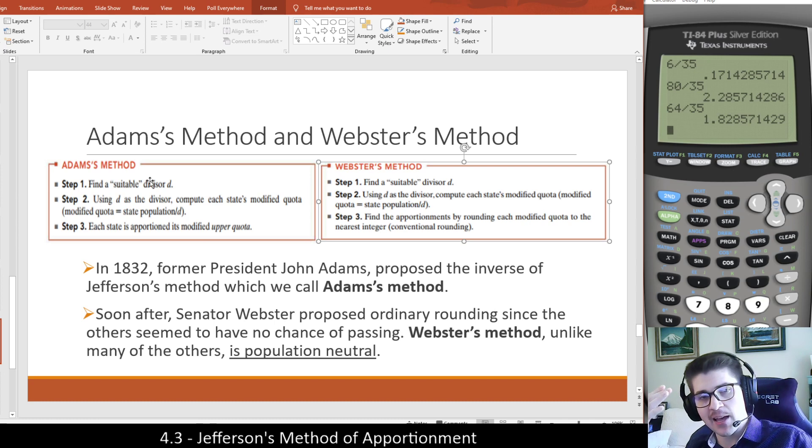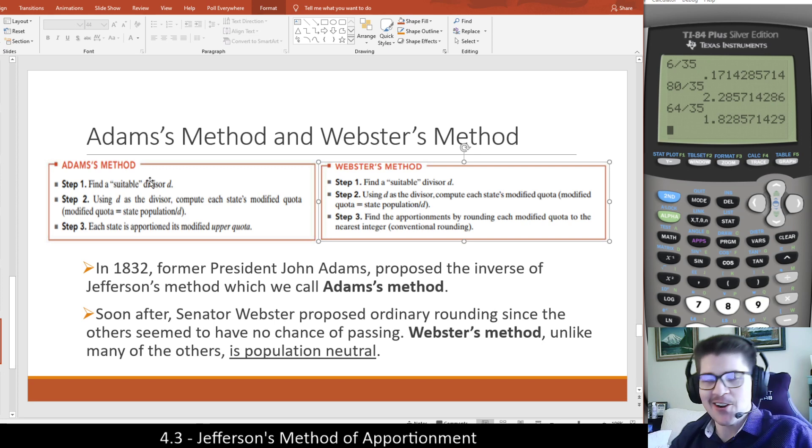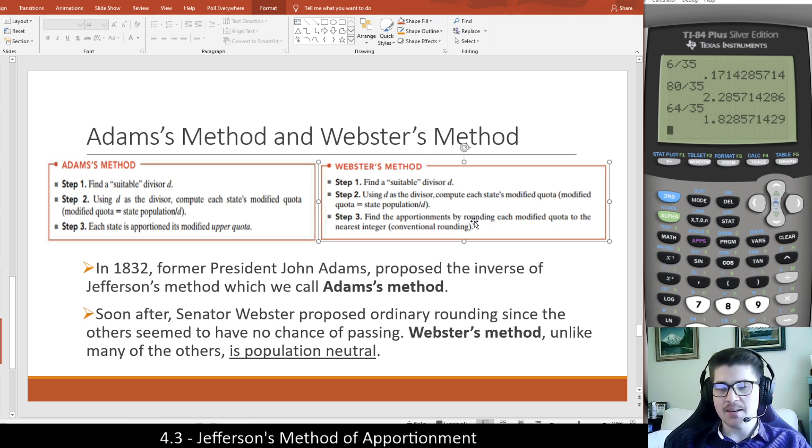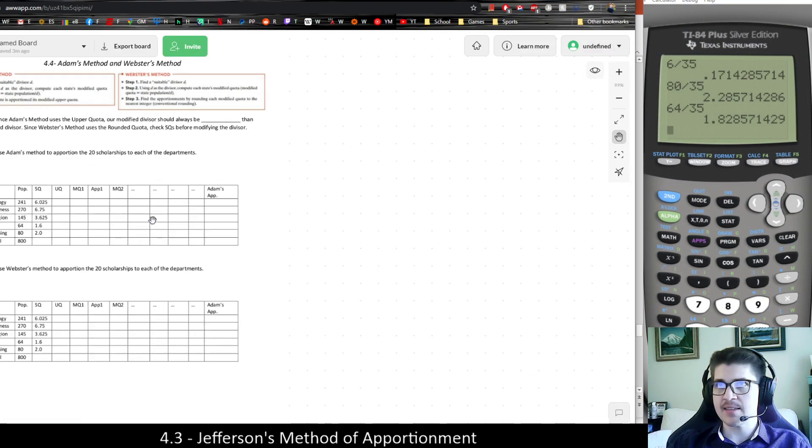You can imagine why certain politicians might want one form of apportionment opposed to another. And really, it's an issue to keep swapping between methods. In U.S. history, there was some change between methods, and you can imagine, bickering about this. Soon after, Webster proposed a method of using conventional rounding, which is population neutral.